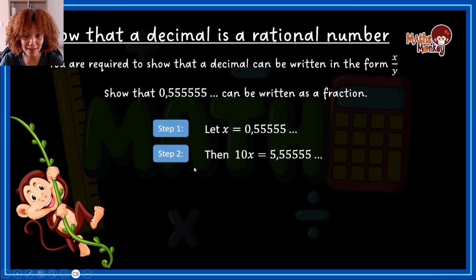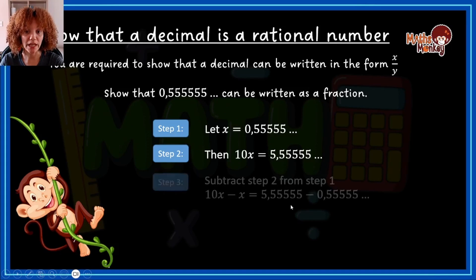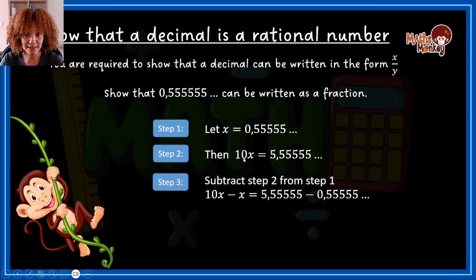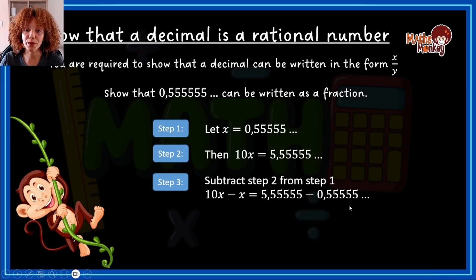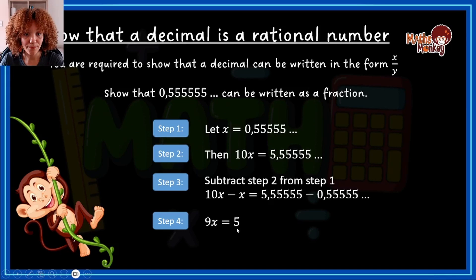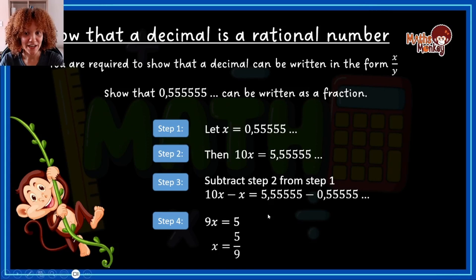So 10x minus x: on the left we get 9x, and on the right we calculate 5.555 minus 0.555, which equals 5. So 9x equals 5. Dividing both sides by 9, we get x equals 5 over 9. That's how we convert a recurring decimal — we let it equal x, multiply by 10, subtract step one from step two, and solve.